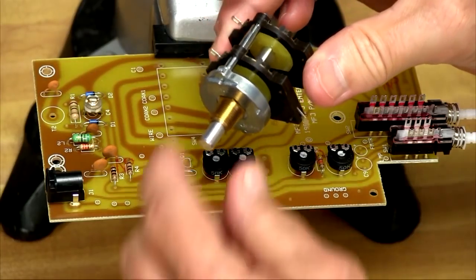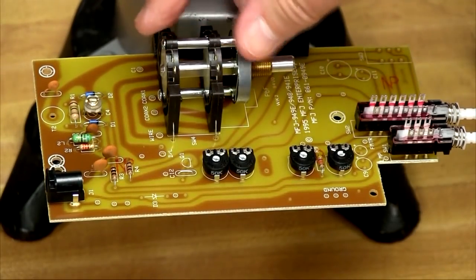Now we've got the final switch to install. And this is an eight pole double throw rotary switch.